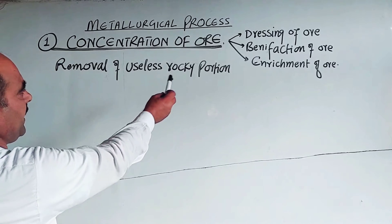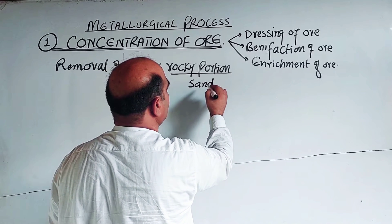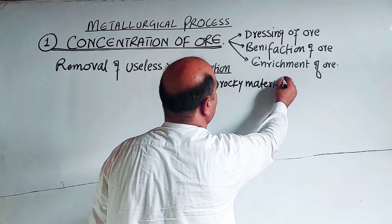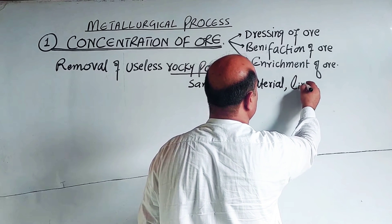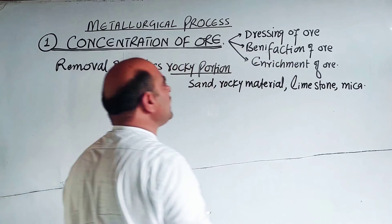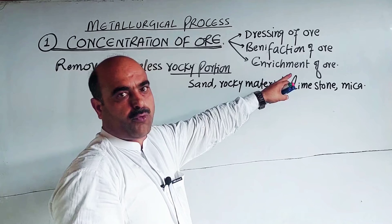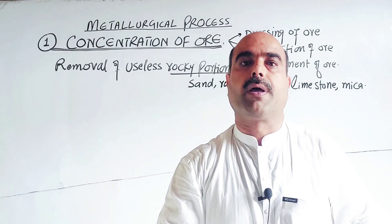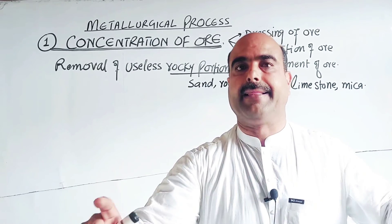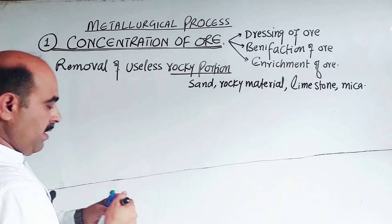The rocky portion — which includes gravel, impurities, sand, limestone, and other useless materials — is removed. The gangue is removed so that the metallic compound is concentrated. The gang, meaning the impurities, is removed to enrich the ore.